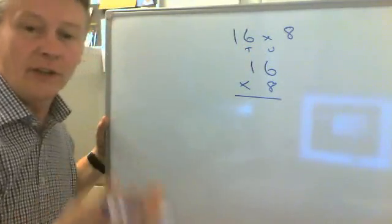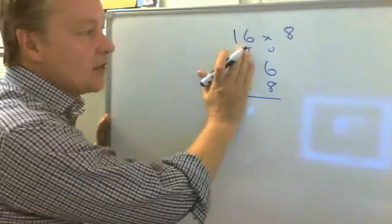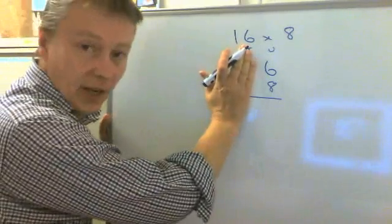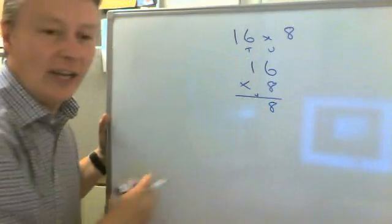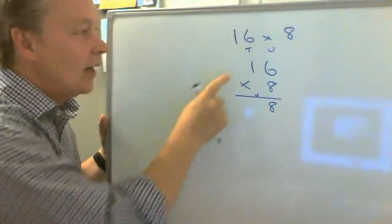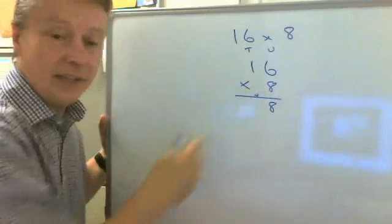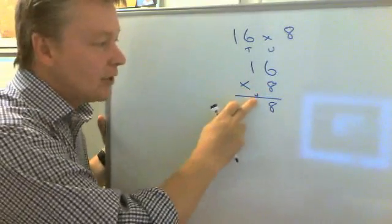What I'm going to do first is I'm going to multiply the units through. So 6 times 8 is 48, so I write down the 8 and I carry the 4 into the 10s column. And then 1 times 8 is 8 plus the 4...